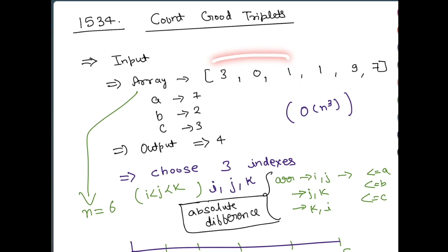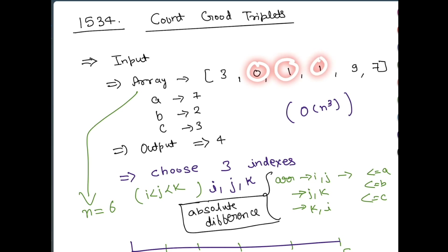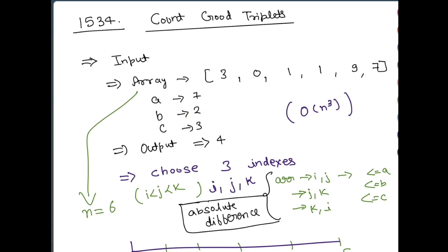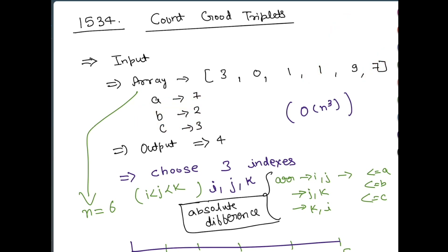So we have 4 good triplets in total: 3,0,1 counts as two triplets (since there are two 1s), then 0,1,1, and 3,1,1. Any other combination like 0, 1, 7 is not valid because the difference between the second and third element is 6, which is not less than or equal to b (which is 2). That's how you find all your good triplets.